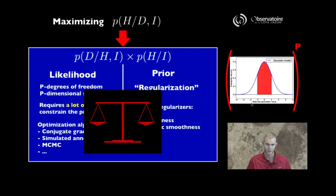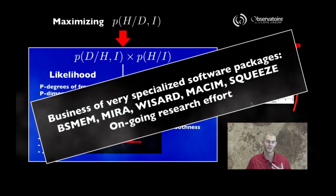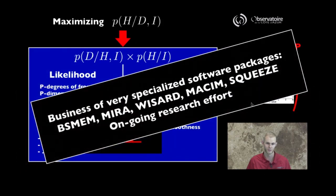You end up in a situation where you have to optimize how much trust you put in your data, and the likelihood analysis, and how much trust you put in the prior information you're injecting into your regularization procedure. And in practice, there's a lot of software that has been developed, software packages that already exist that you can use to help you solve these types of problems. And so this is why you have things like BSMEM, MIRA, WIZARD, MACIM, or SQUIZE more recently.